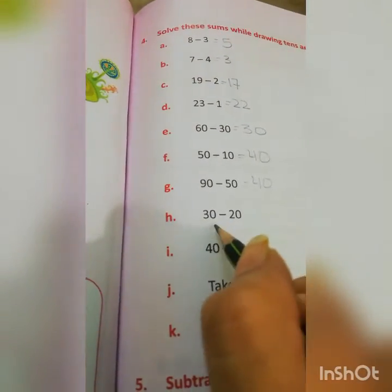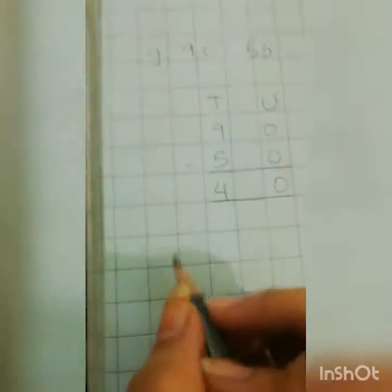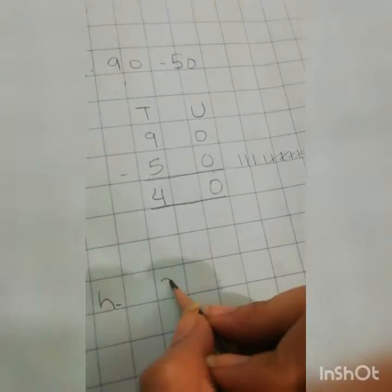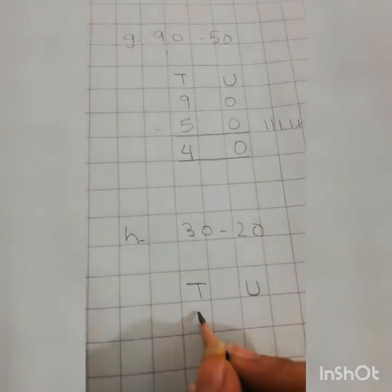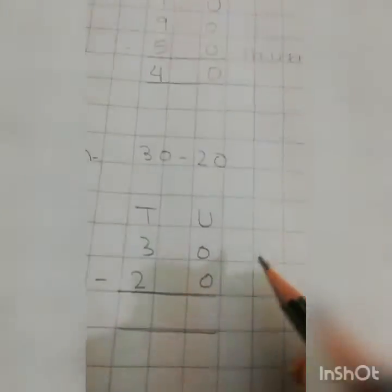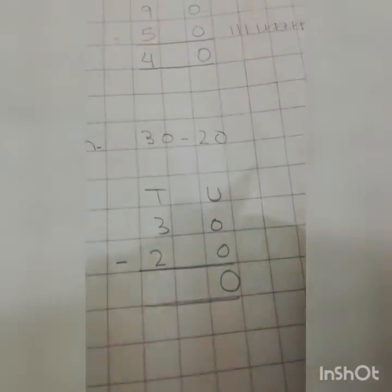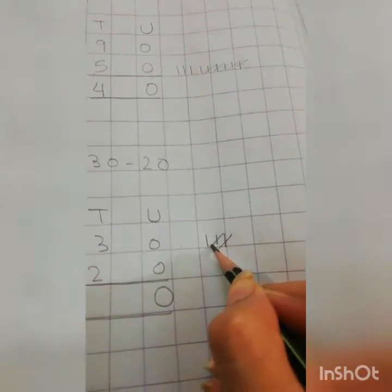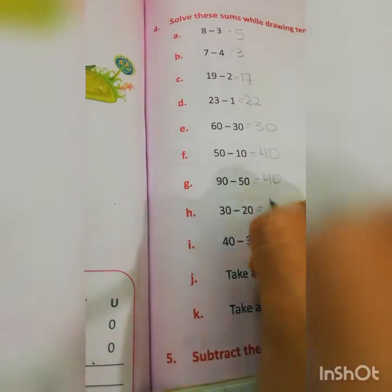Now number H: 30 minus 20. We have to take away 2 from 3. Draw 10s and units: 3, 0 minus 2, 0. Step number 1 — units are 0, so the answer will remain 0. Now 3 minus 2: draw 3, take away 2, so the answer is 1. So we will write the answer: 10.